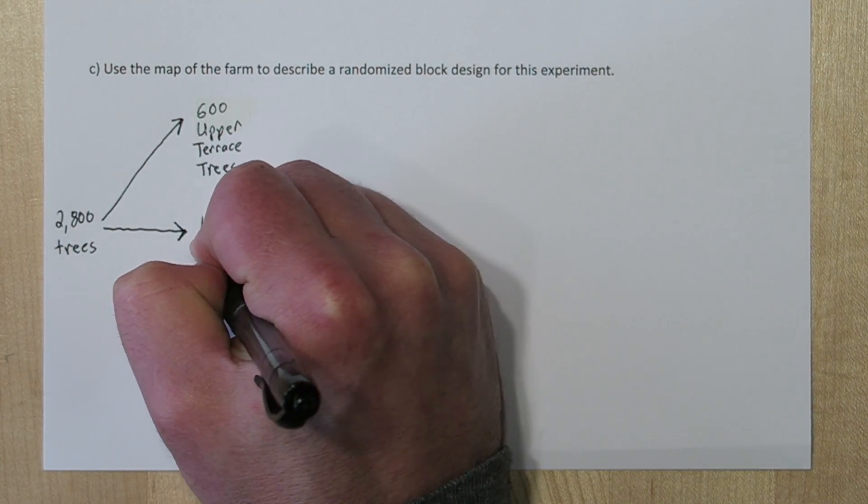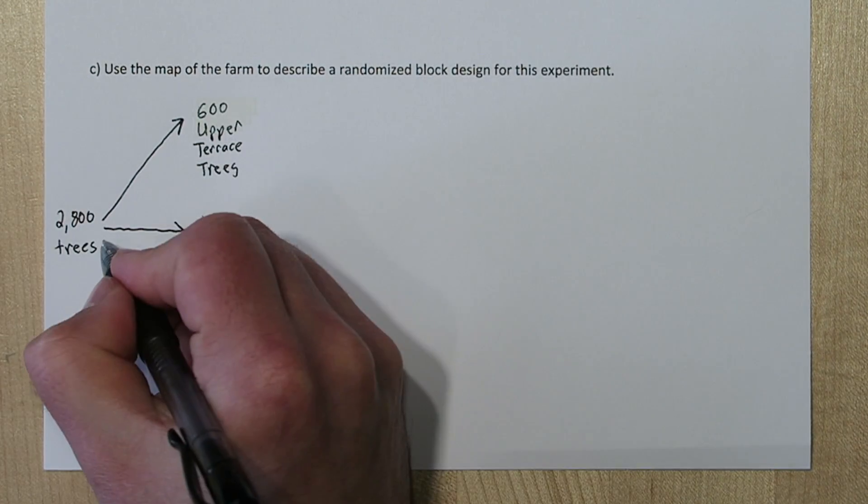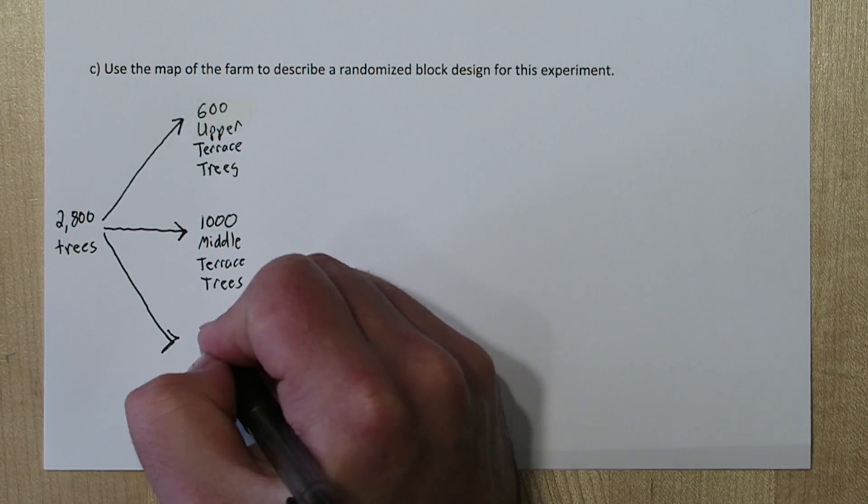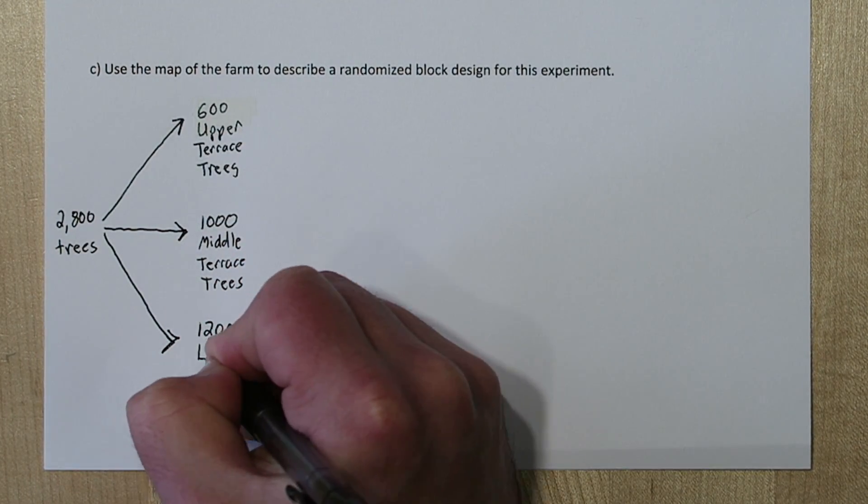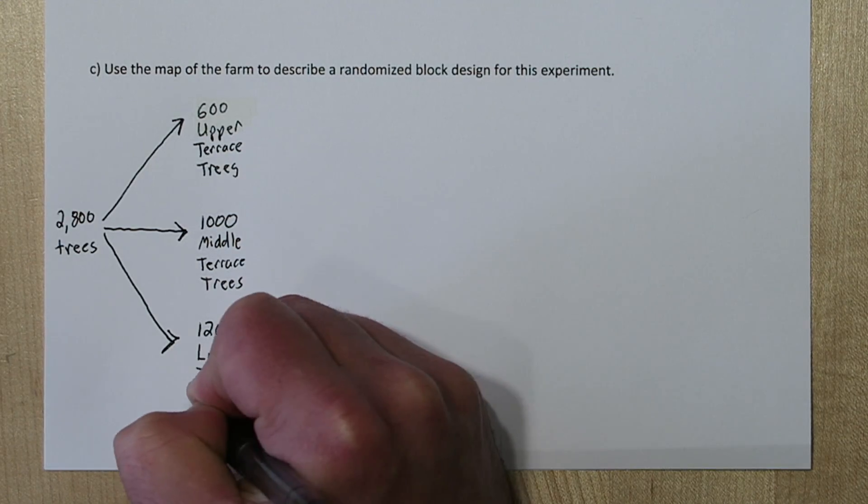...and 1200 lower terrace trees. Now this time we're not using random assignment, we're actually dividing it based on the characteristic of where it's growing. These are our blocks.